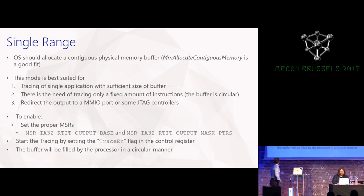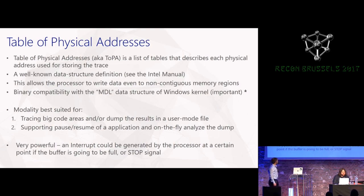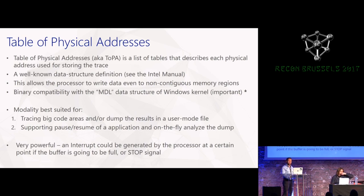To implement the single range mode, you allocate a contiguous physical memory buffer, set two MSRs — the RTIT Output Base and the Output Mask — then start the trace by setting the trace enable flag in the control register. The buffer is automatically filled in a circular manner by the CPU. The Table of Physical Addresses is a better output implementation: you can set various physical memory addresses, create a table instructing the CPU where to write. You can even set a PMI interrupt raised when part of the buffer is filled, then stop, resume, or do whatever you want.